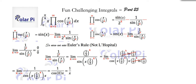As k goes to infinity, cosine of x times 1 half to the k goes to cosine of 0, because 1 half to the k goes to 0. So we get cosine of 0 times x in the denominator. Cosine of 0 is 1, so the limit is 1 over x. Since this limit is 1 over x, and the only other survivor was sine x, our infinite product is simply sine x over x.